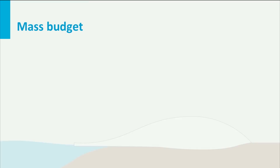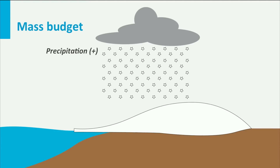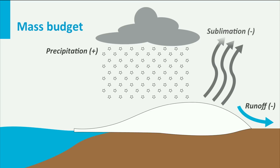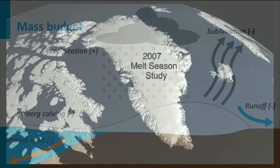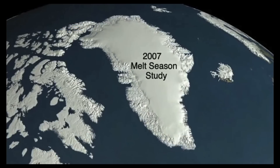Glaciers gain mass through snowfall. At the surface, they lose mass due to surface melt and runoff and sublimation. In the places where land ice reaches the ocean, it melts from ocean heat and produces icebergs. Increased ice flow results in higher discharge to the ocean.